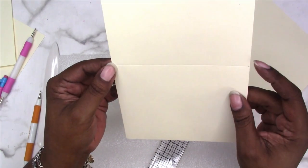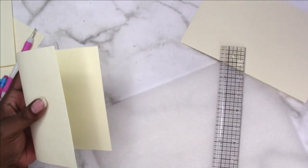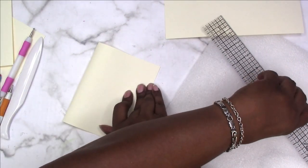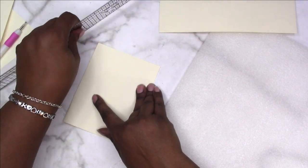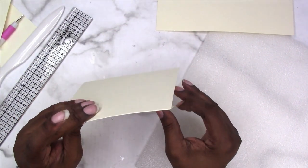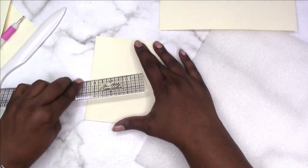Go ahead and fold it. If you don't have a bone folder, you can use the edge of your ruler to fold the paper over, and that gives you a nice clean fold.